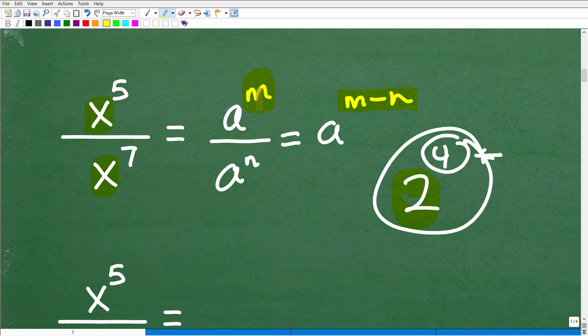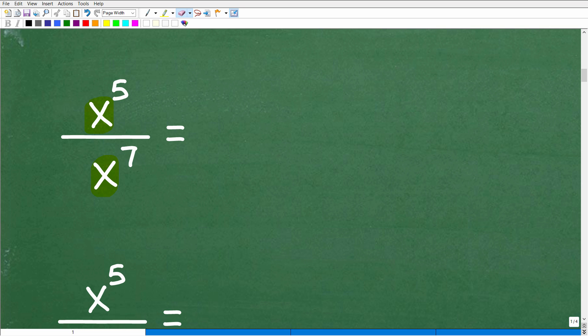So if we have the same base, in this case, we do it's x and x, what we can do when we're dividing is subtract the exponents. We take the top exponent, that's going to be first minus the denominator's exponent. So the exponent of the numerator, we're going to subtract away the denominator's exponent. So let's go ahead and show you this rule in action. It's probably easier to show it than to explain it.